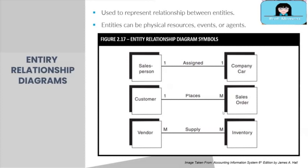The symbols used in ERD are shown on the diagram — a square with a shadow behind it, a line, and cardinality notation. The square with a shadow represents the entity. The line connecting two entities represents the relationship between them. The letters or numbers beside the entities — such as one, one-to-one, one-to-many, or many-to-many — represent cardinality.